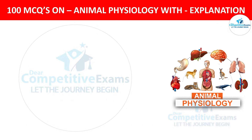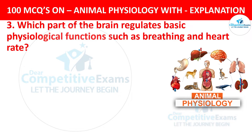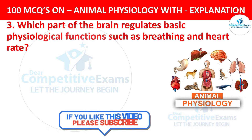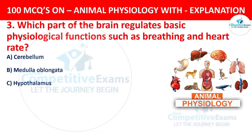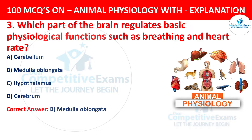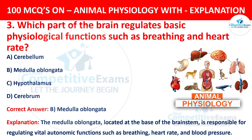Question number 3. Which part of the brain regulates basic physiological functions such as breathing and heart rate? The options are cerebellum, medulla oblongata, hypothalamus, or cerebrum. The correct answer is B, medulla oblongata. The medulla oblongata is located at the base of the brain stem and is responsible for regulating vital autonomic functions such as breathing, heart rate, and blood pressure.